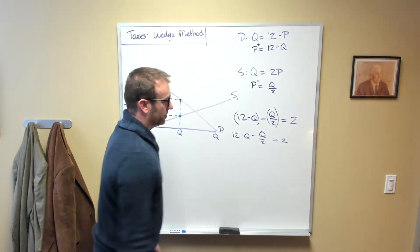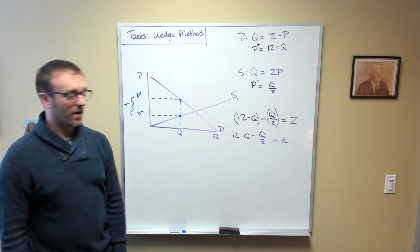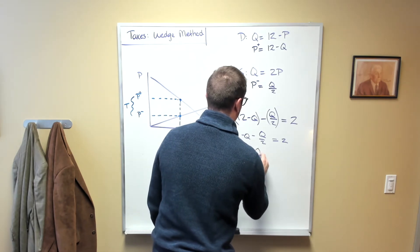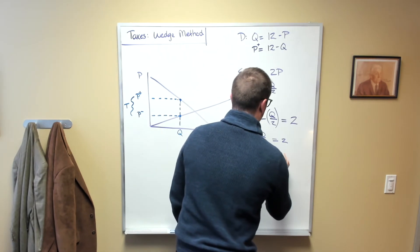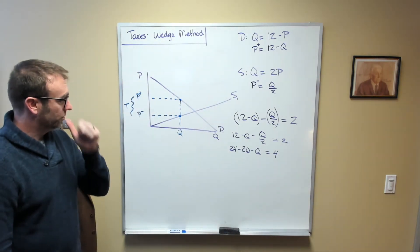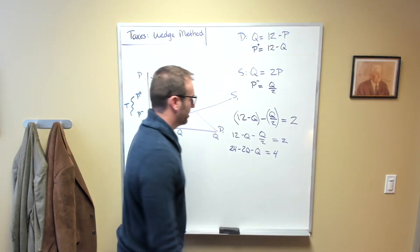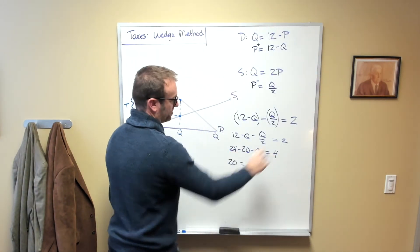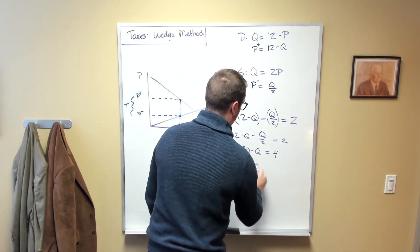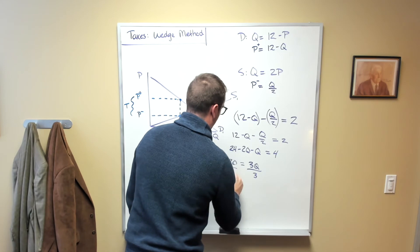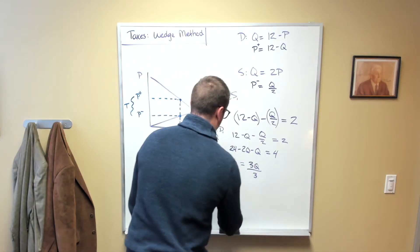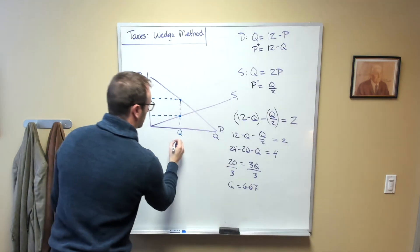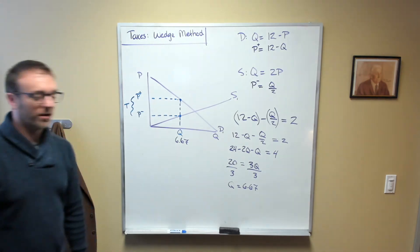I'm just going to multiply both sides by 2 just to get rid of the fraction to make everything easier for us. So 24 minus 2Q minus Q is equal to 4. I am going to subtract 4 from both sides. That will get me 20 is equal to, and I'm going to add all the Qs to the other side, so that'll give me 20 is equal to 3Q. I divide by 3, and that will get me Q is equal to 6.67, which if you recall was the quantity that we had before.